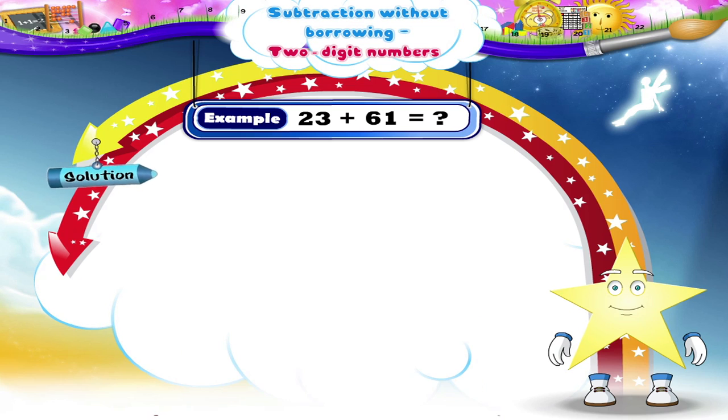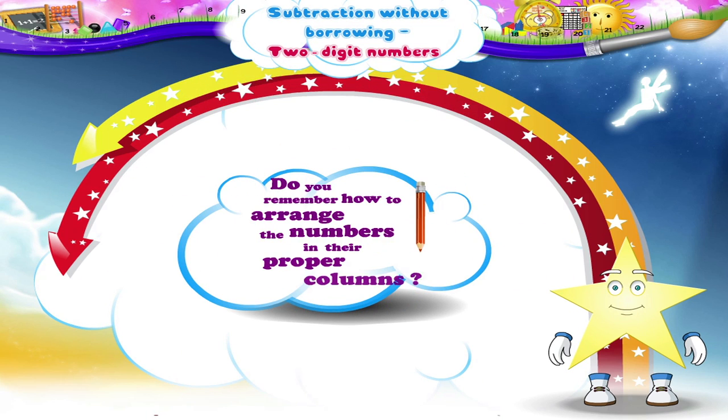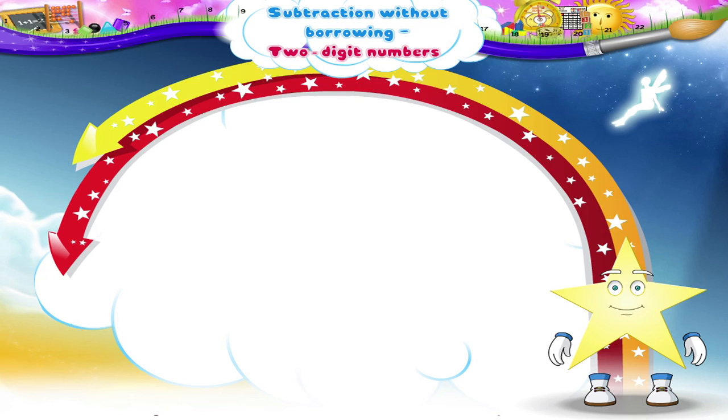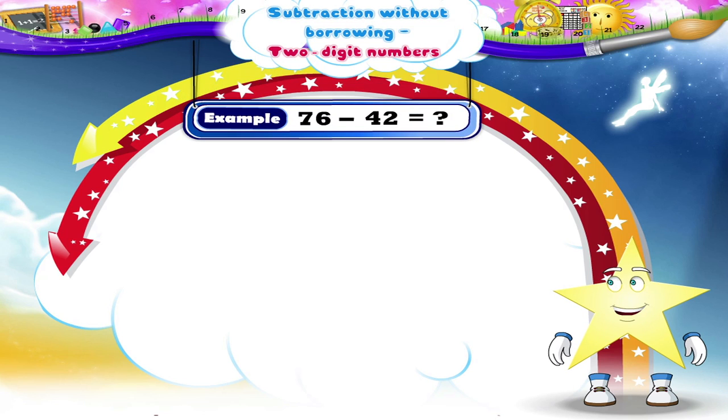Tell me, Starry, do you remember how to arrange the numbers in their proper columns? Okay, then consider the example 76 minus 42. First, arrange the numbers in appropriate columns.